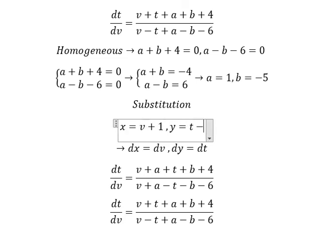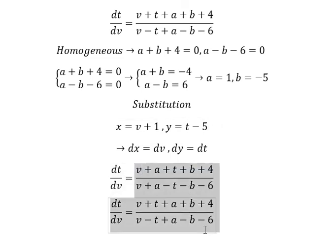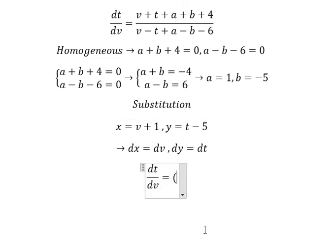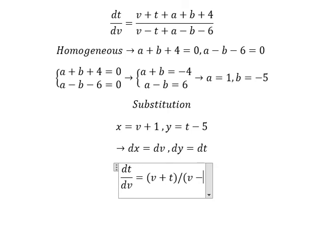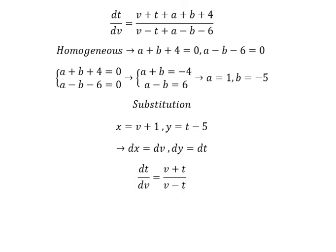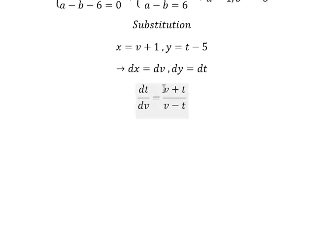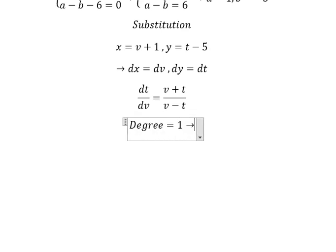Since b is negative 5, we substitute a equals 1 and b equals negative 5 into the equation and simplify. This gives us the expression v plus t over v minus t. The degrees of v and t are both one, which means this is a homogeneous equation.